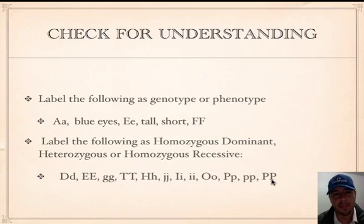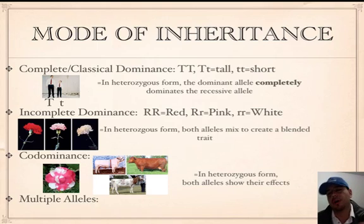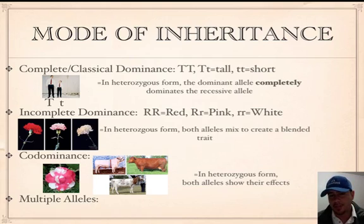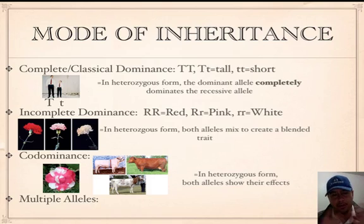Moving on — there are different types or modes of inheritance. In other words, all genes don't just work the classical way where one overpowers the other. Sometimes they both win, sometimes they mix, and sometimes there's more than two alleles. Genes work in four different ways to give us our trait expressions.